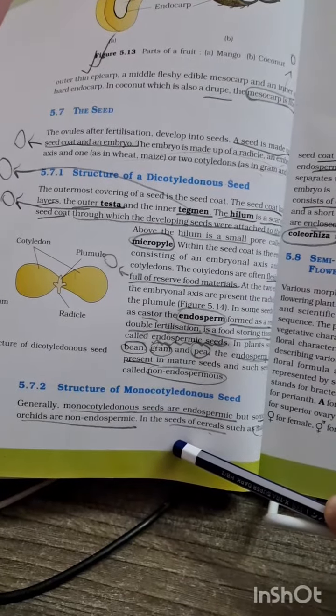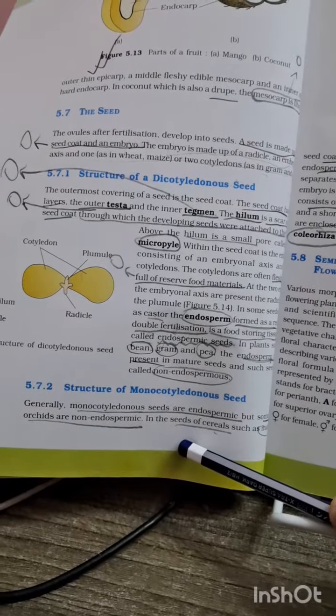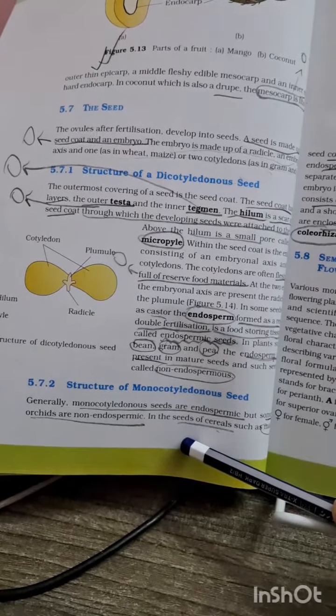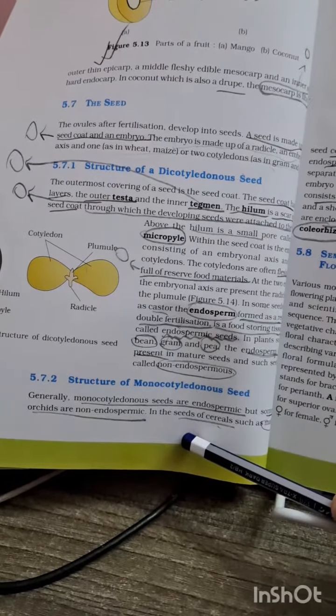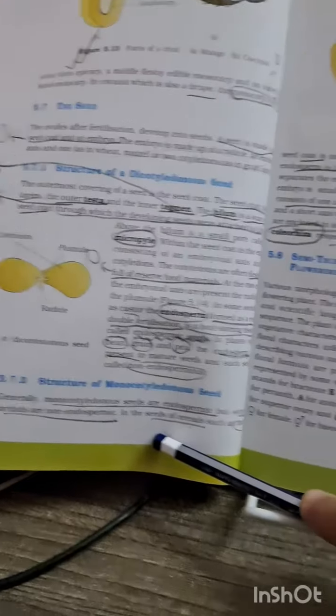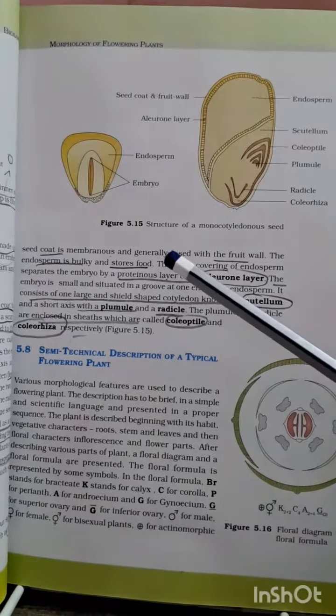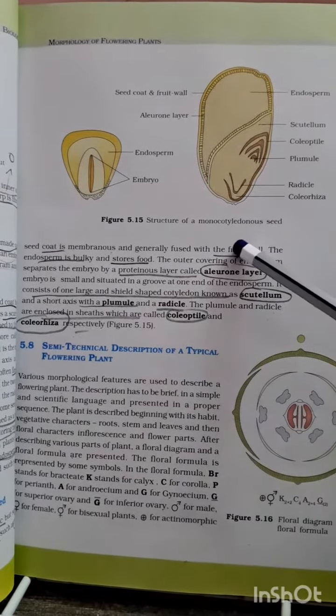The first MCQ they might ask you about the endosperm of monocotyledonous plants. Monocotyledonous seeds are endospermic except for some orchids. In seeds of cereals such as maize, the seed coat is membranous and generally fused with the fruit wall. You have to remember this as a special character of maize seeds.